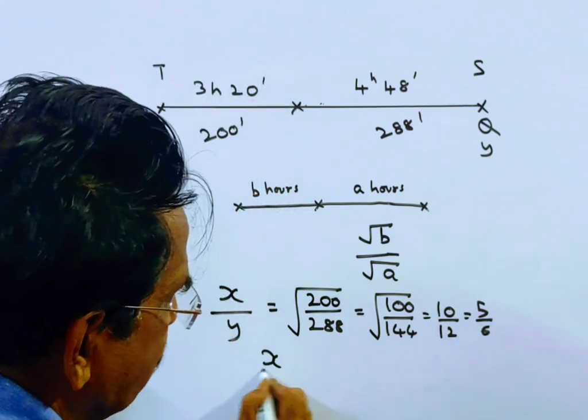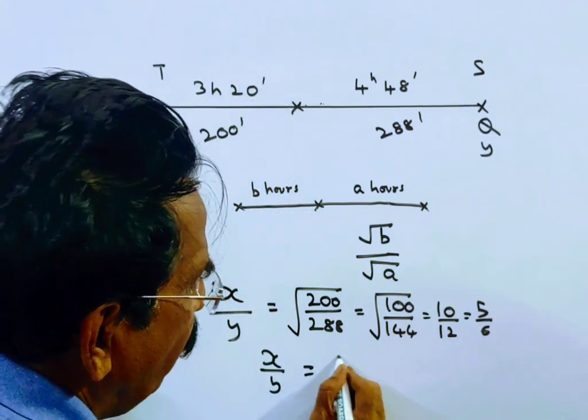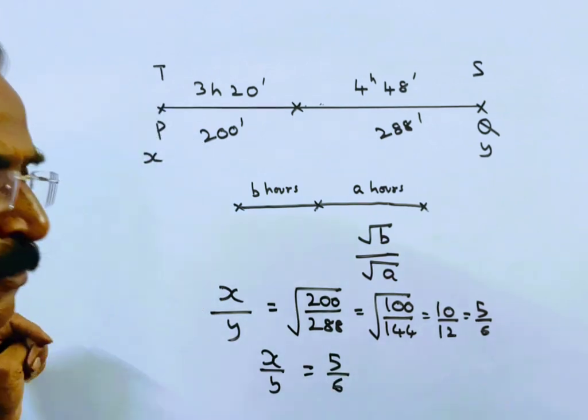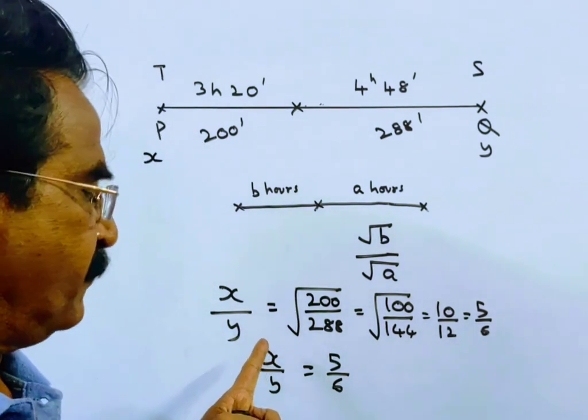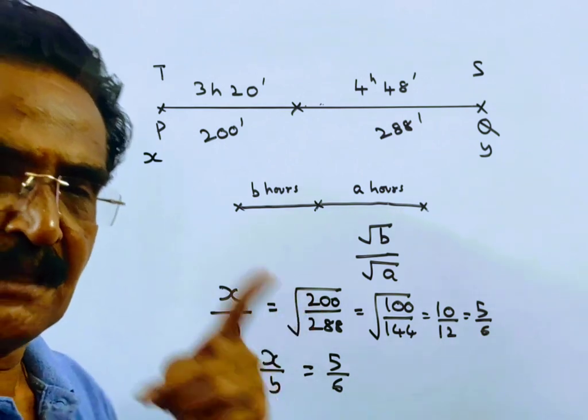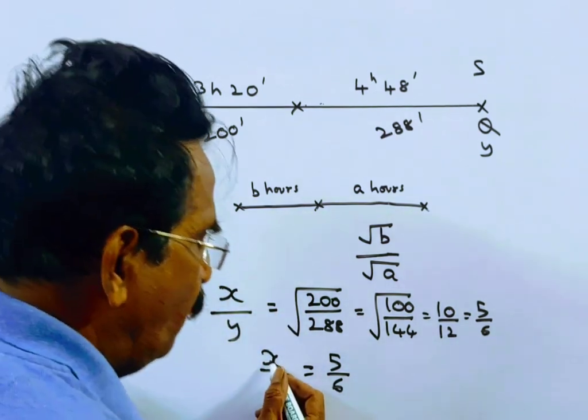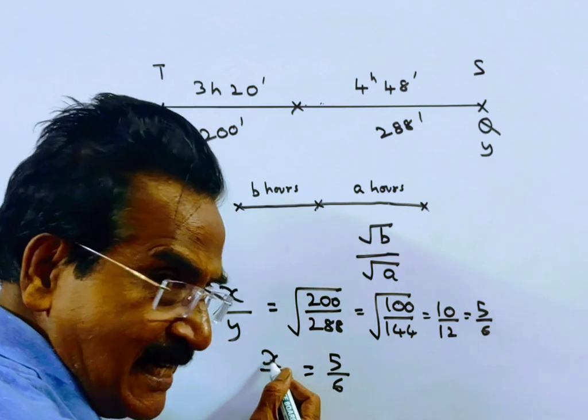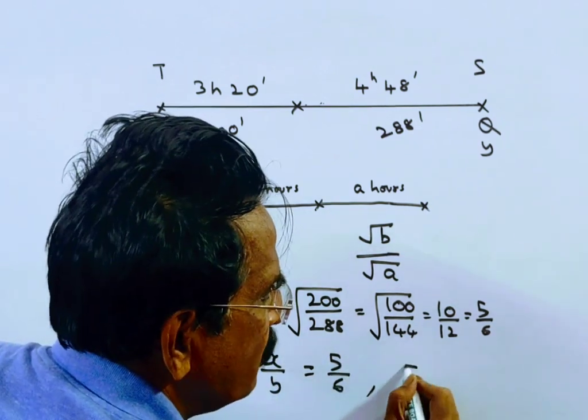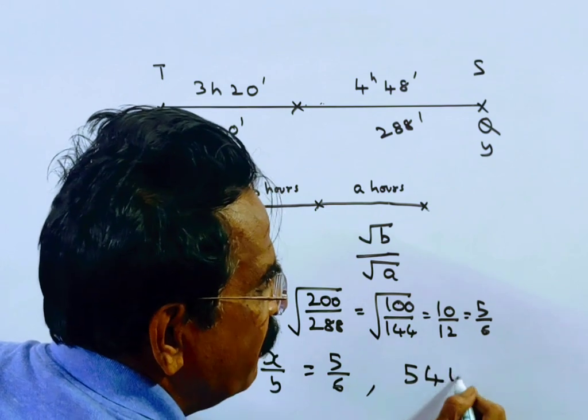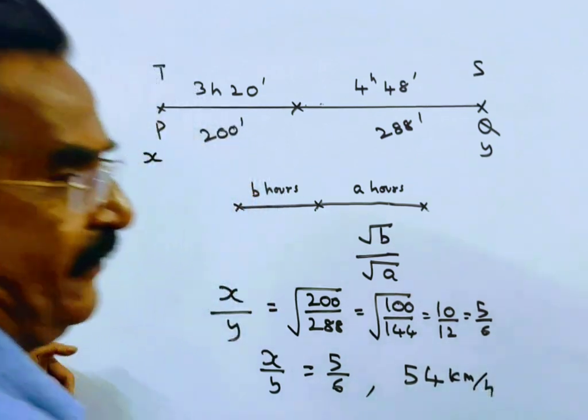X by Y is equal to 5 by 6. Now X is equal to 45, that is the speed of train P. So 45 means 5 nines, 9 sixes is 54. So the speed of train Q is 54 kmph.